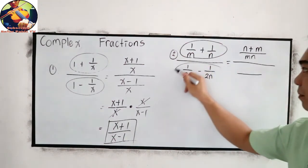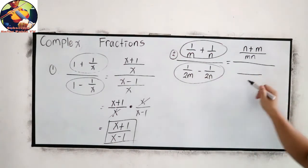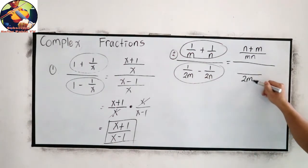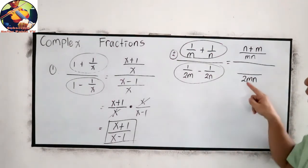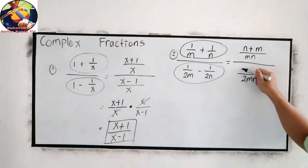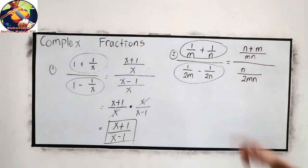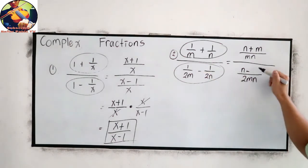For our denominator, so we have 2MN. This will be our LCD. Now 2MN divided by 2M, that is N times 1, so we have N. 2MN divided by 2N, that is M times negative 1, negative M.